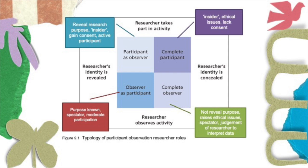The second role is the researcher choosing to be participant as observer, whereby the researcher needs to be an insider in order to do this. The researcher will reveal their intention to the participants, will gain their consent, and will also become an active participant in any related activities.